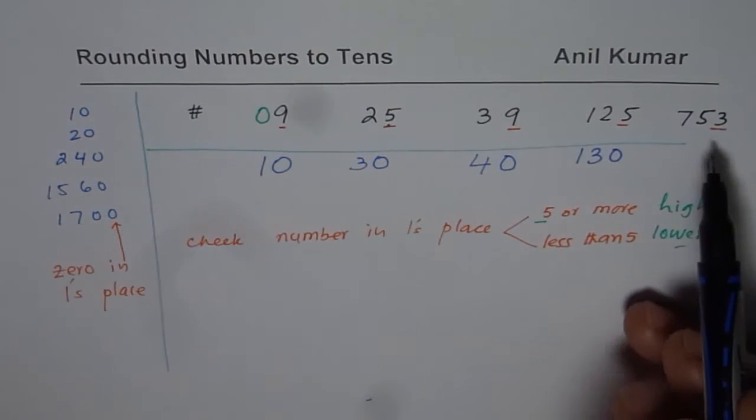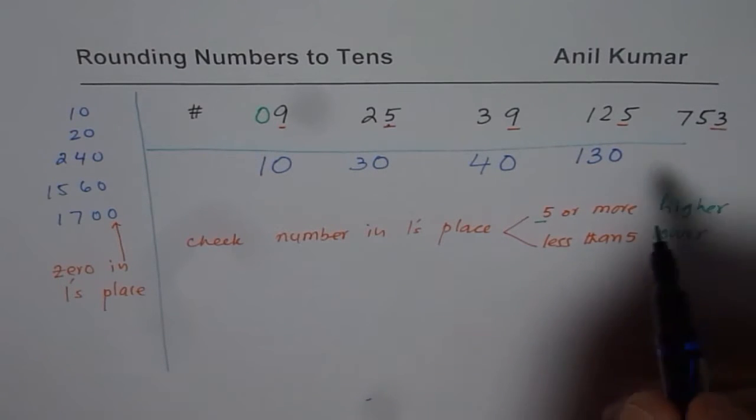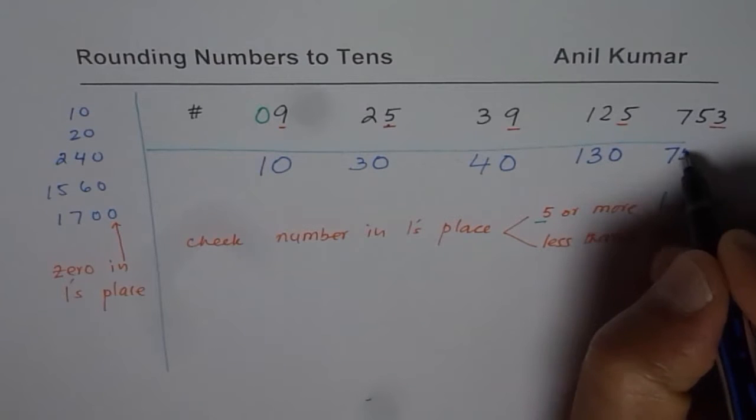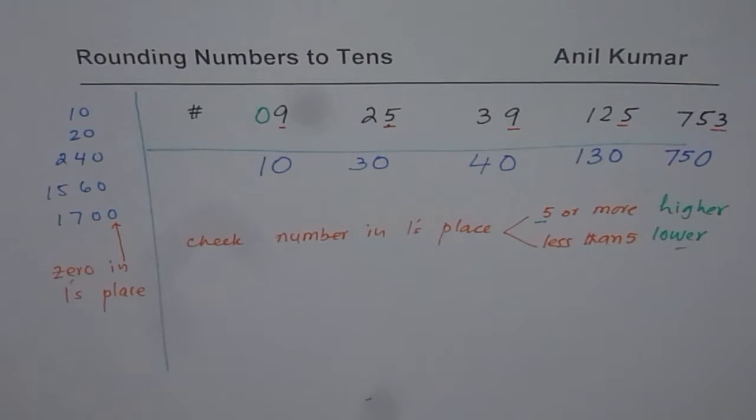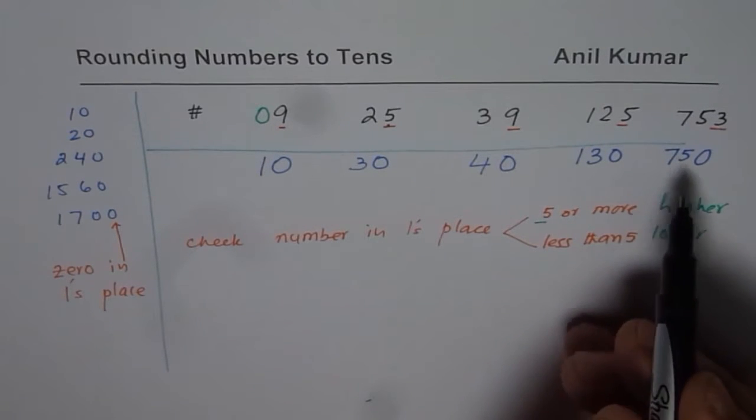In this position, 1's place is 3, which is less than 5. So we'll round it to the lower tens. In this case, the lower number will be 750. Not 60. Do you get the idea? So that is how we will be rounding to nearest tens.